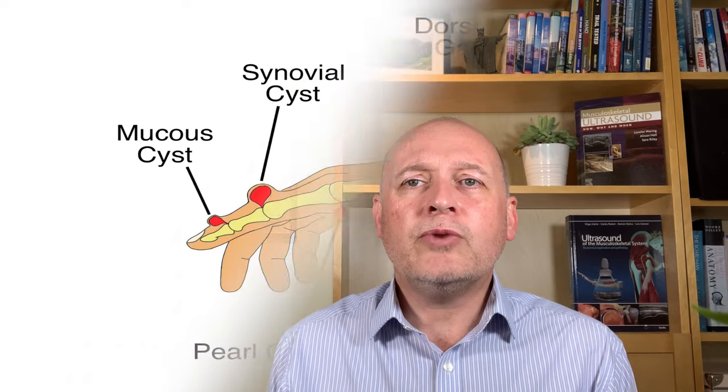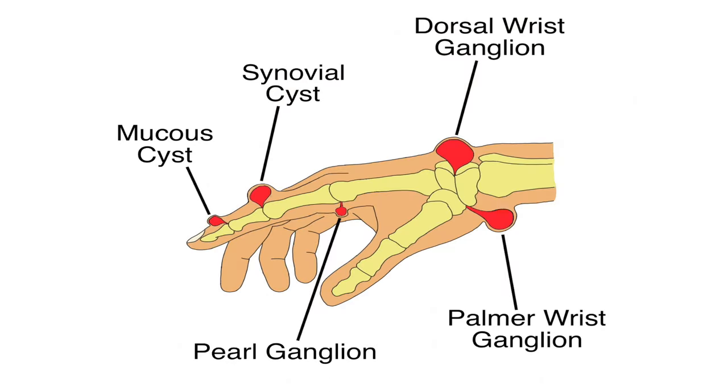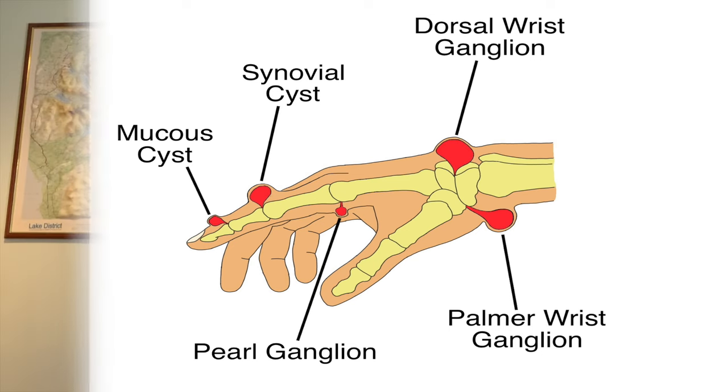Okay, so that's all of the fluid-filled cysts around the hand and wrist, and this picture just summarises where they occur, what we call them, and what they look like. So that about wraps things up. I do hope you found the video helpful. Thanks very much for watching, and bye for now.